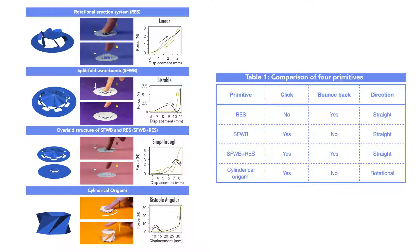The overlaid structure of split fold water bone has a monosnap-through property that generates a click like split fold water bone, but bounces back with another click if the user releases the applied force.